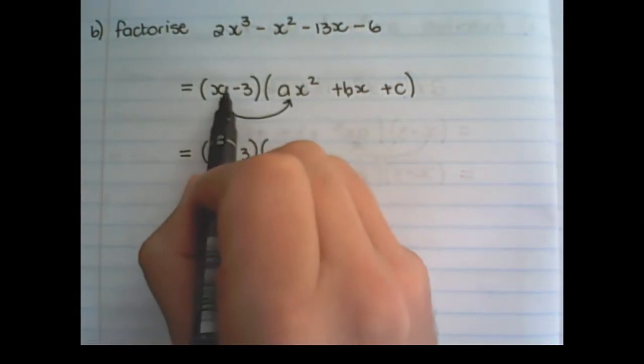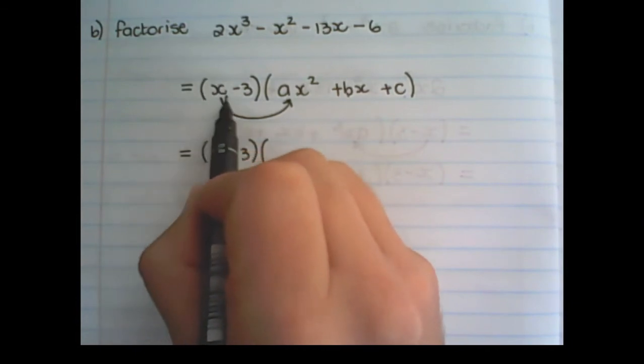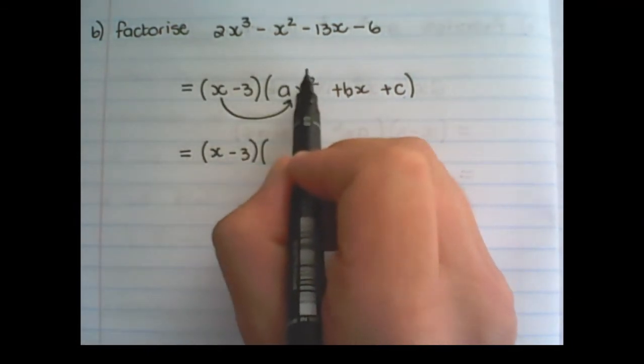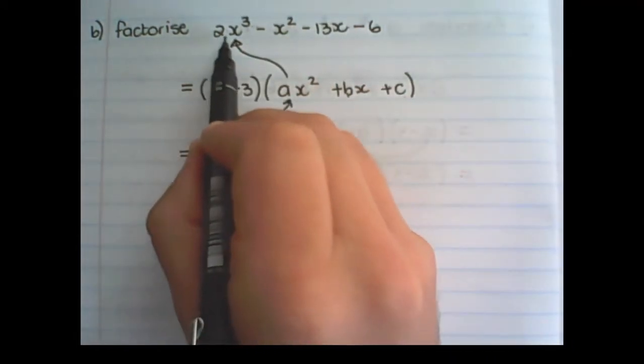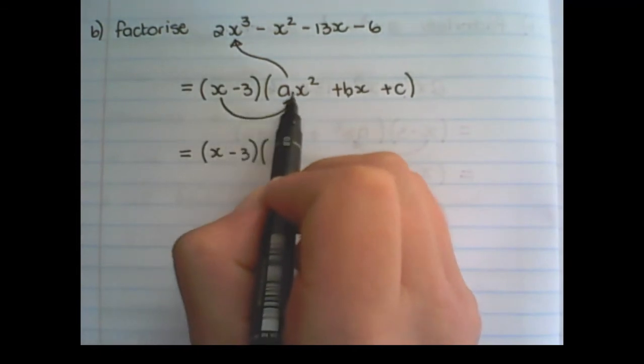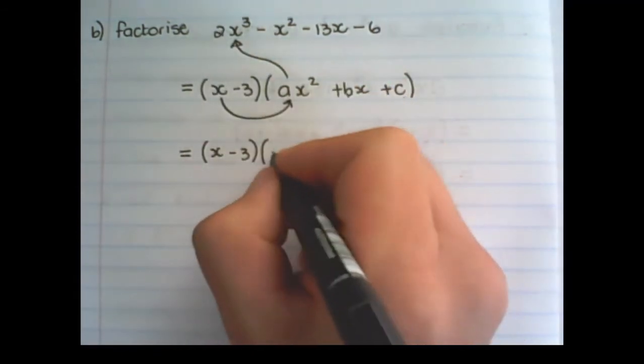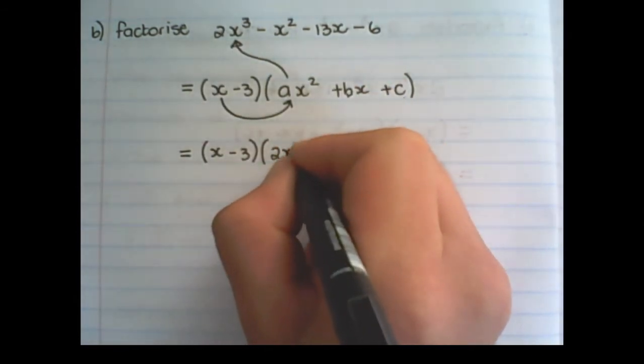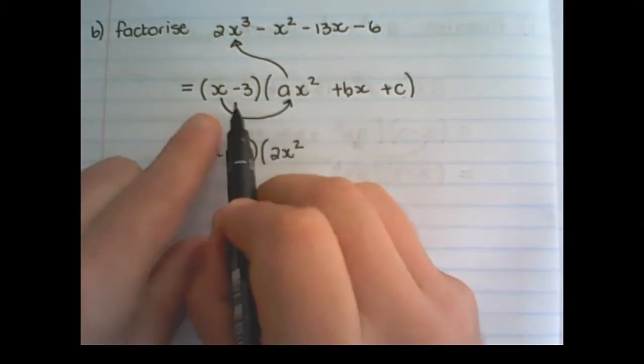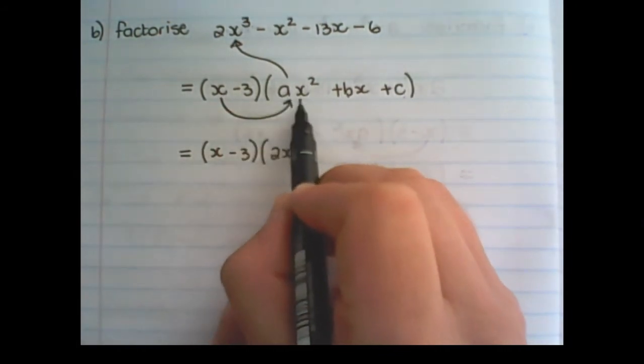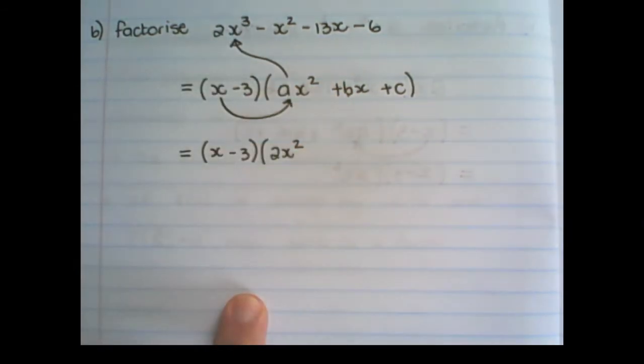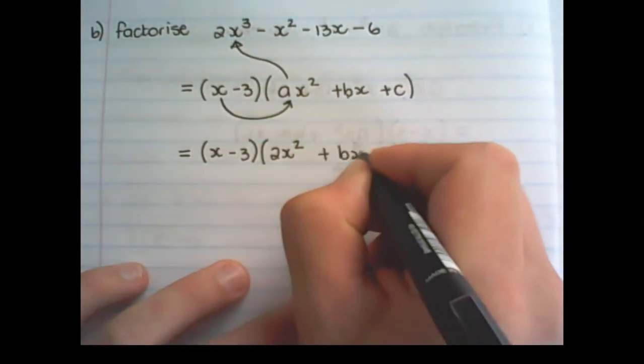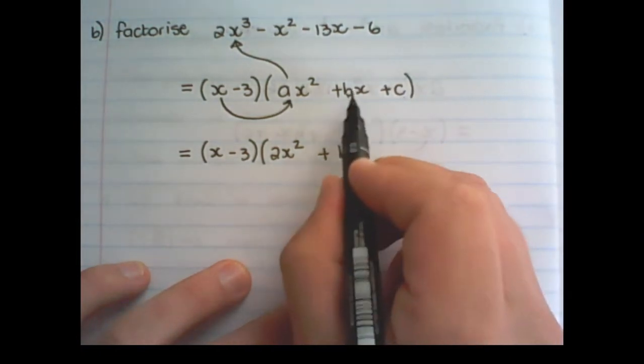In order to solve a, I take the first term in this bracket, and I multiply it with the first term in the second bracket. And what I want to produce is 2x cubed. And I can see that I need to have a's value as 2. Because if I multiply x with 2x squared, I will get 2x cubed.